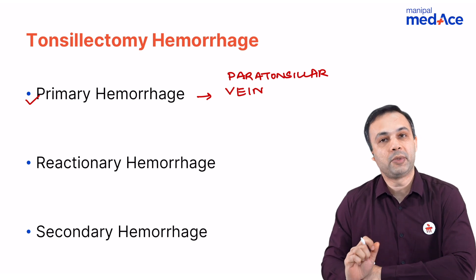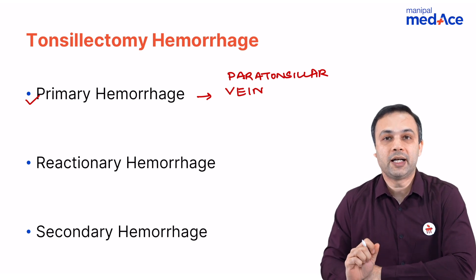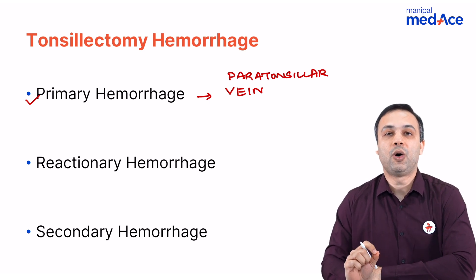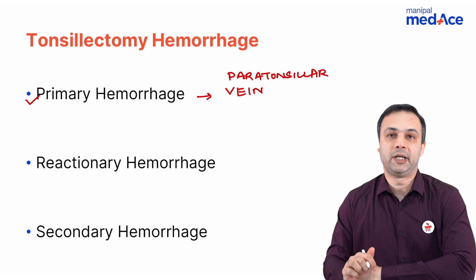What do you do in a primary hemorrhage? You will ligate the bleeder or you will cauterize the bleeder.